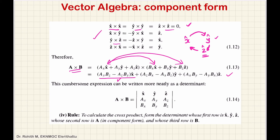So, a cross b for two vectors is computed using a determinant, whose first row is x-cap, y-cap, z-cap, whose second row is the components of vector a, and whose third row is the components of vector b.